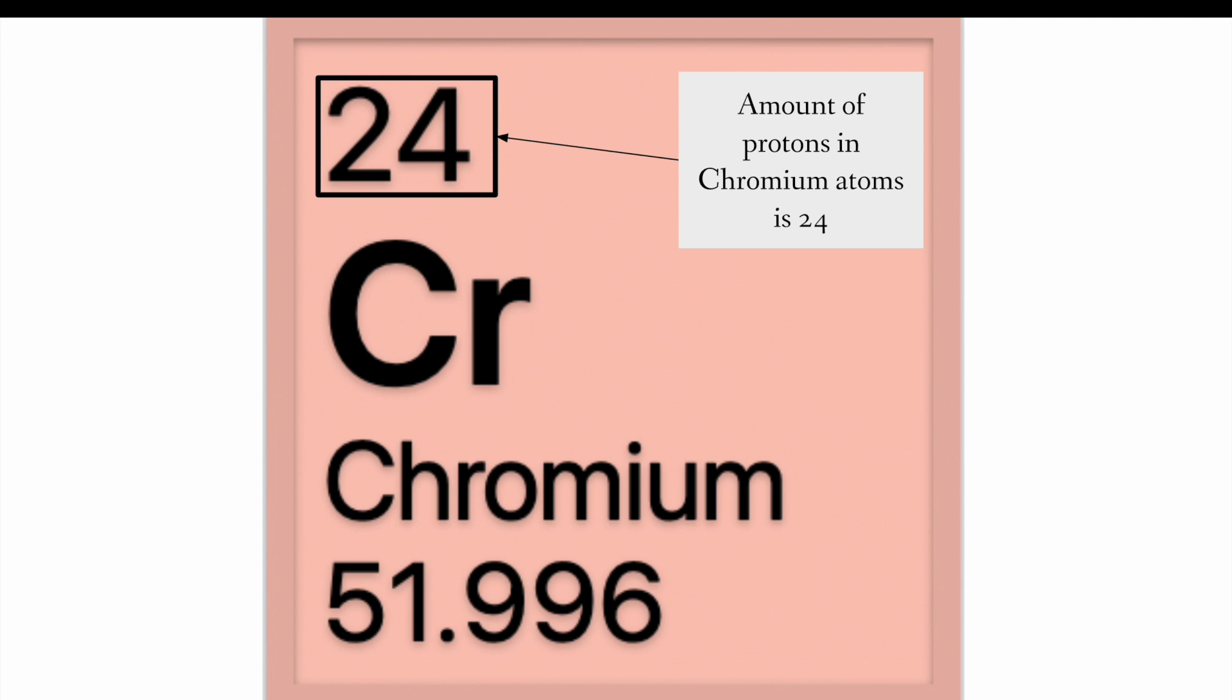Chromium's atomic number is 24. So, the amount of protons in chromium atoms is 24. Once again, this is the atomic number of the chromium atom.